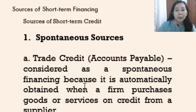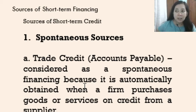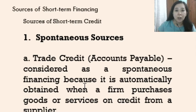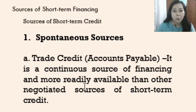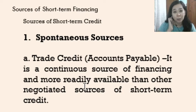Trade credit or accounts payable is considered to be a spontaneous source of credit because it is a normal activity that takes place in the course of operations. The entity can automatically obtain this when they purchase goods and services on account from suppliers. This source is also a continuous source of financing and more readily available than other negotiated sources of short-term credit.